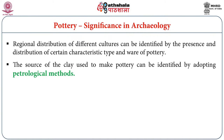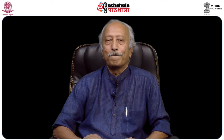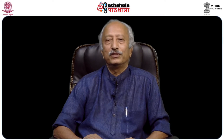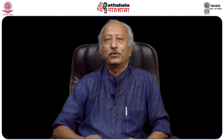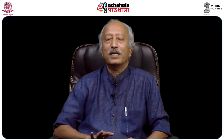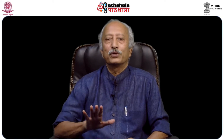Regional distribution of different cultures can be identified by the presence and distribution of certain characteristic pottery types and wares. The source of clay used to make pottery can be identified using petrological methods. For example, the spatial extent of Harappan civilization can be determined based on the distribution of its characteristic black-on-red ware. The distribution of black-on-red ware over a geographical area helps demarcate that area as belonging to that particular culture.